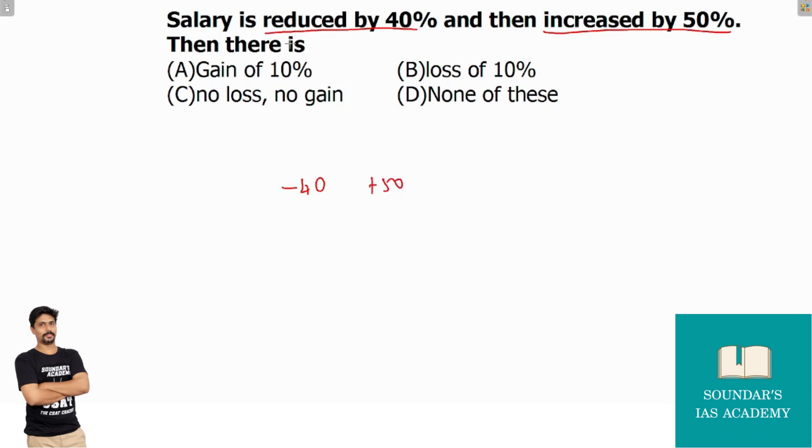So what changes are there? First step: add minus 40, add 50. Then we get plus 10.